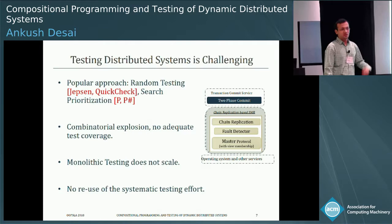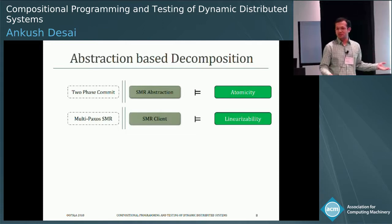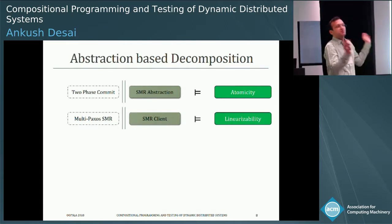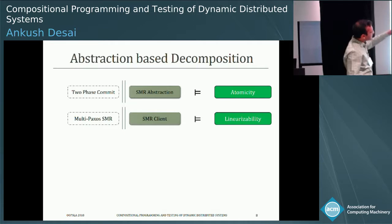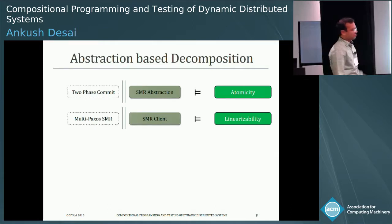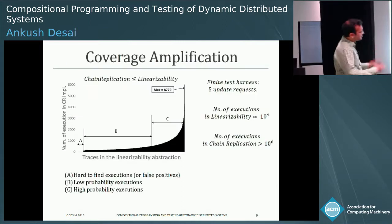The solution, well known from formal methods and software engineering, is compositional reasoning using abstractions — sometimes called mocking in testing. The idea is to test the two-phase commit protocol in isolation by mocking everything else it interacts with — using an abstraction of the SMR protocol — and test the multi-Paxos protocol using an abstraction of the most abstract client. You then show that each component in isolation satisfies its atomicity property.